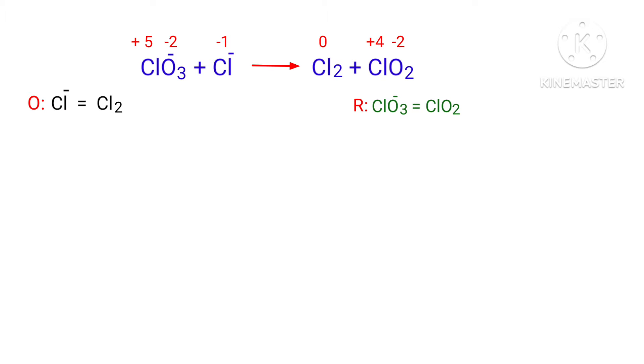In the ion-electron method, one reaction is divided into two half reactions, and then they are balanced and added together.